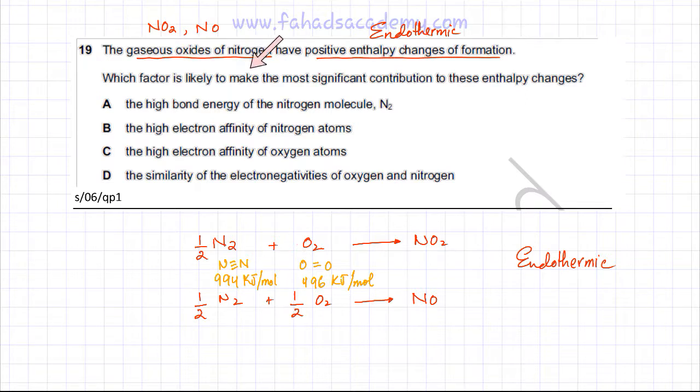So which factor is likely to make the most significant contribution to these enthalpy changes? That it's going to be the high bond energy of the nitrogen molecule because you need to break that bond for the reaction to occur. So option A looks perfectly correct.